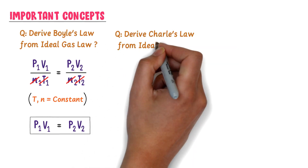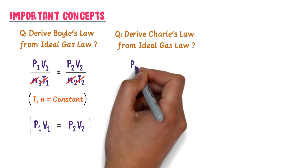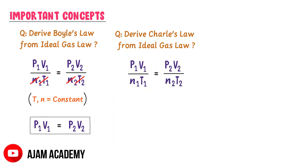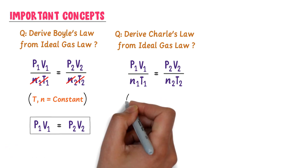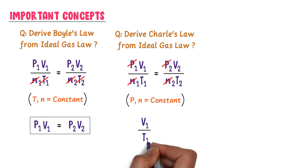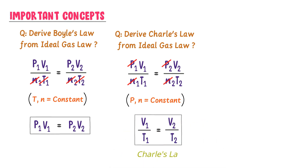To derive Charles' law from the ideal gas law: starting with P₁V₁/N₁T₁ = P₂V₂/N₂T₂, Charles' law is derived at constant pressure with number of moles remaining the same, so canceling those constant variables gives V₁/T₁ = V₂/T₂. This is Charles' law and the required proof.